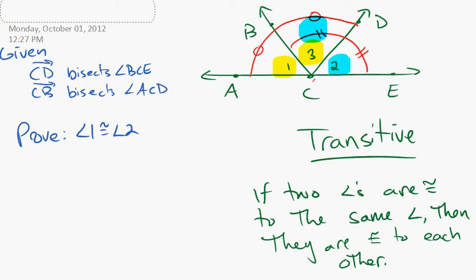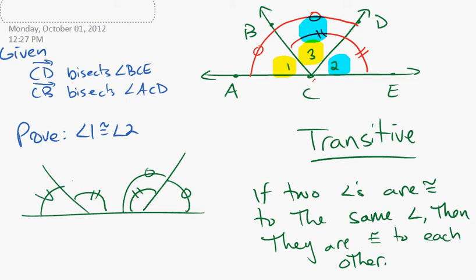Now in your reading tonight, there'll be some variations on this transitive property. For example, you might be given that this angle is congruent to this angle, and that this angle is congruent to this angle, and that this angle is congruent to this angle.